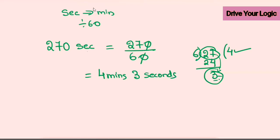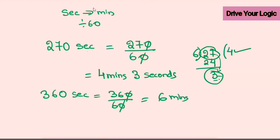When you get a clean division, it's straightforward. Take 360 seconds ÷ 60: cancel two zeros, so 36 ÷ 6 = 6. Therefore 360 seconds equals 6 minutes.